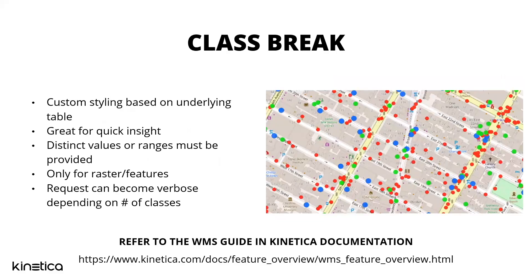Class break rendering is where we're able to differentiate based on an attribute. That attribute has to be either a string or a numeric attribute, because you need to create individual intervals — individual classes — to style. If they're strings, for example, you might style by payment type: Visa, Mastercard, Amex — color coding each payment type differently and representing each point differently.